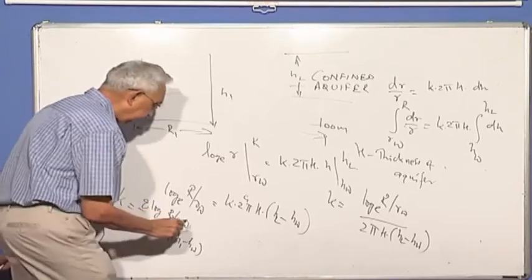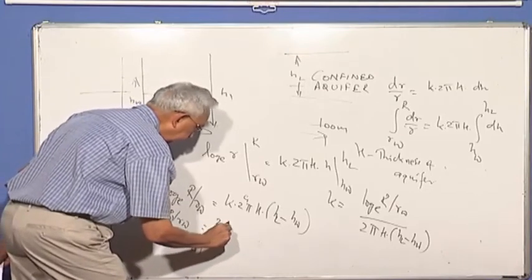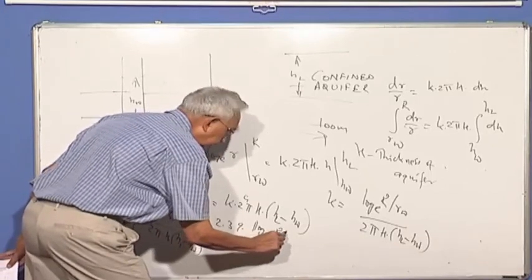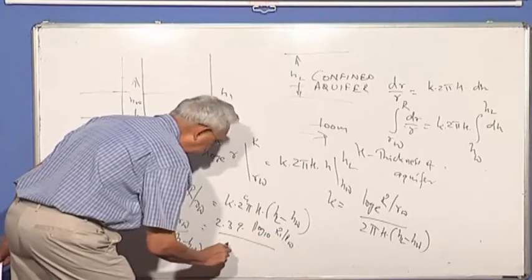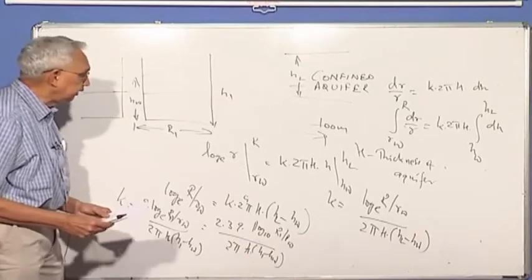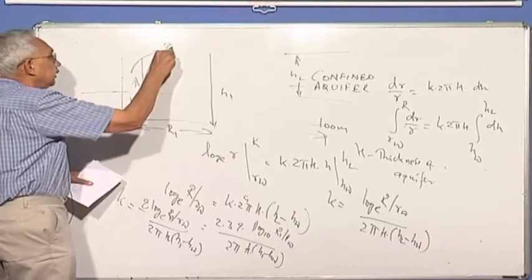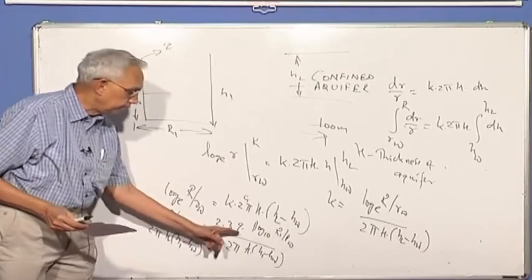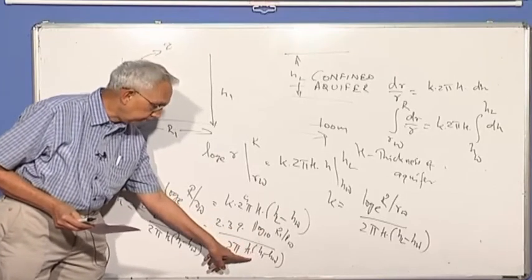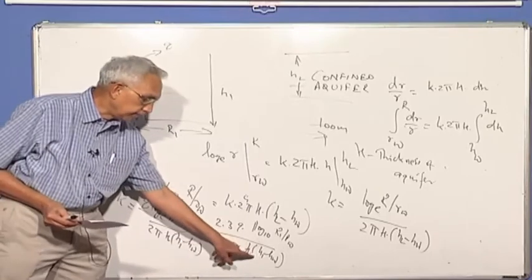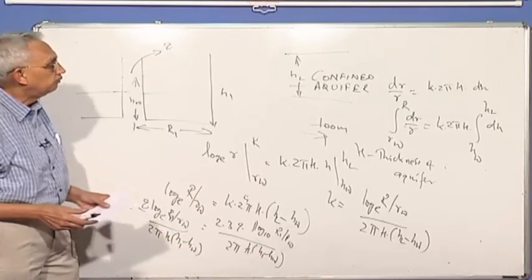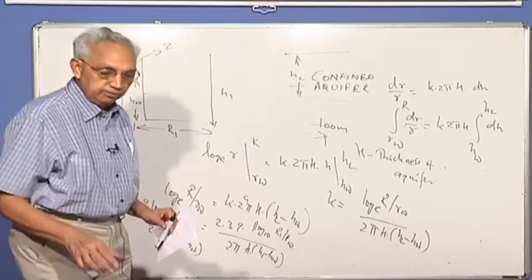So K is equal to, and of course you're going to measure the Q, it's a function of Q. So that's how you find it out, K is Q time. And then you can convert this into log to the base 10, so it becomes 2.3 Q, the rate of discharge, log to the base 10 R1 by RW divided by 2 pi H into H1 minus HW. This is the expression, so you are measuring the amount of water you are pumping, the rate of pumping Q, and from there you have measured the head in a well at a distance R1 or capital R1, and it's equal to H1. You know the distance, I mean the height of water in the well, which is at a distance of RW. So this is how we determine the permeability from a confined aquifer.